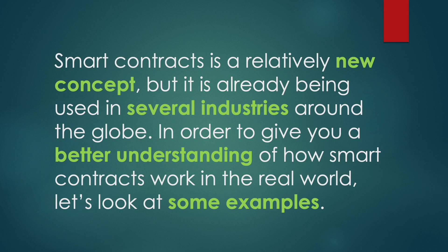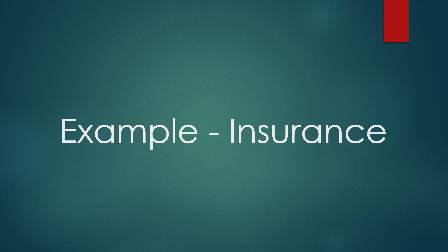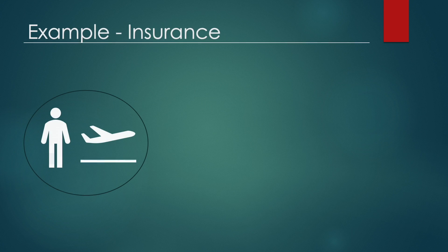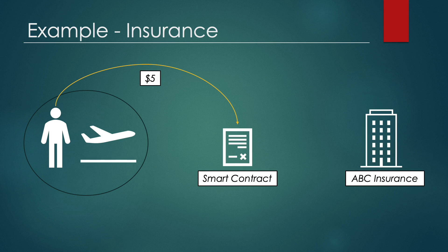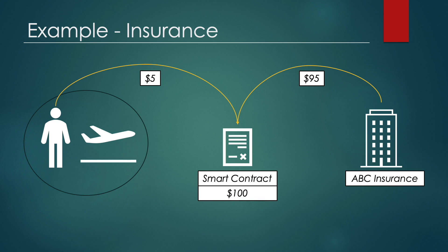Smart contracts is a relatively new concept, but it is already being used in several industries around the globe including governments. In order to give you a better understanding of how smart contracts work in the real world, let's look at some examples. For instance, it can be used in insurance. There are several insurance companies that have trialed smart contracts which compensated airline customers if their flights were delayed. Let's say that Adam is about to board a flight from Paris to London. He sends five dollars worth of cryptocurrency to the ABC insurance smart contract and provides his flight number. ABC insurance sends 95 dollars to the smart contract, so now there is a hundred dollars in the smart contract.